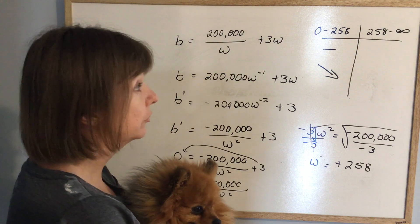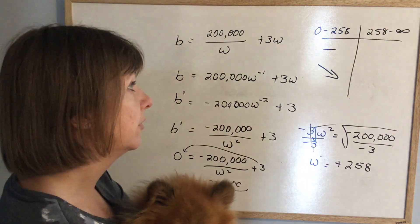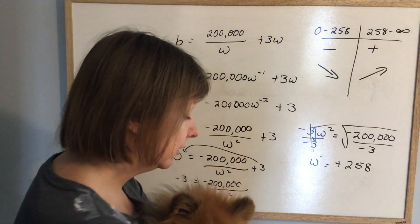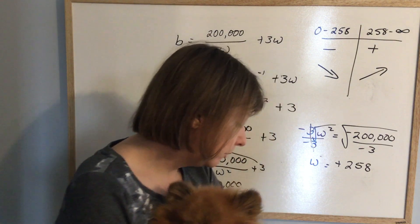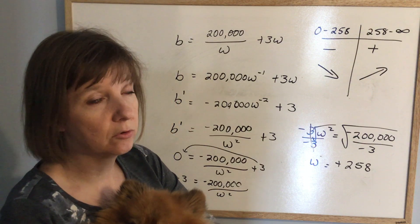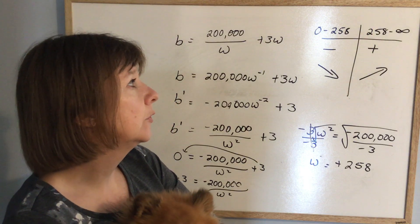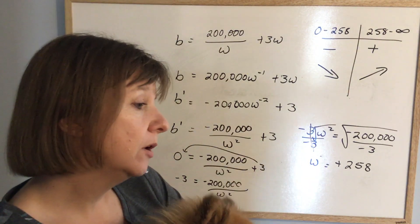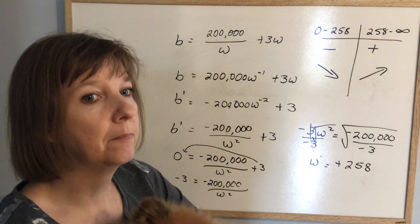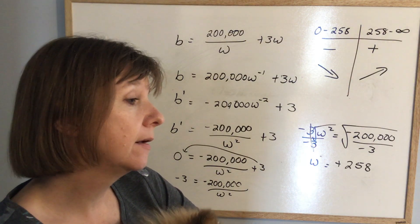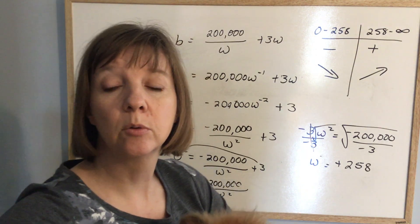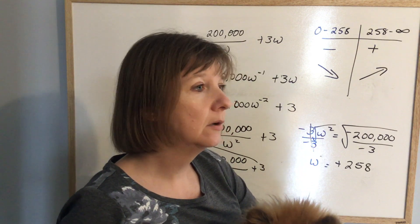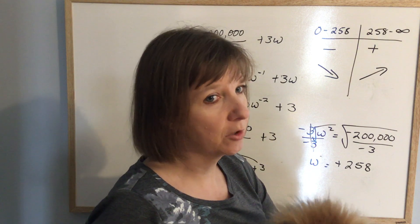Picking a number over 258 — say 300 or even 1000 — and putting it into the derivative gives a positive number, meaning the boom length is increasing. So the length of the boom is decreasing as the width goes from 0 to 258, and increasing from 258 onwards. And that's it. I'll post some questions for you; they'll be due Monday midnight so I can check them Tuesday morning. That gives you from Thursday until then. See you Monday for your test at 2 o'clock.